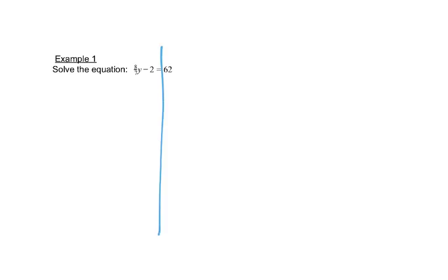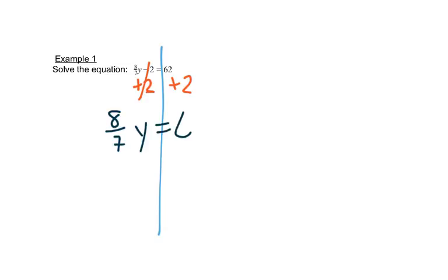So let's look at this equation. We'll start by drawing a line down through the equal sign. There's nothing on the left that we can simplify and nothing on the right — the right side is 62. So there's nothing to simplify, and we just start moving. It says minus 2, so we'll add 2 to both sides, which leaves us with y equals 64.